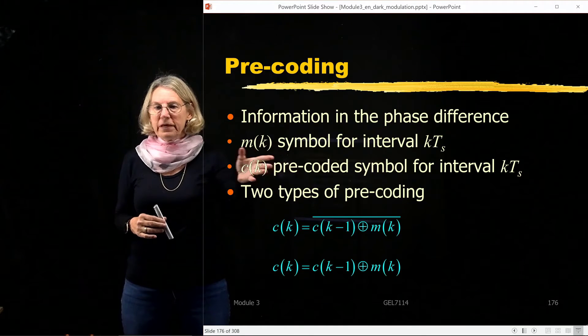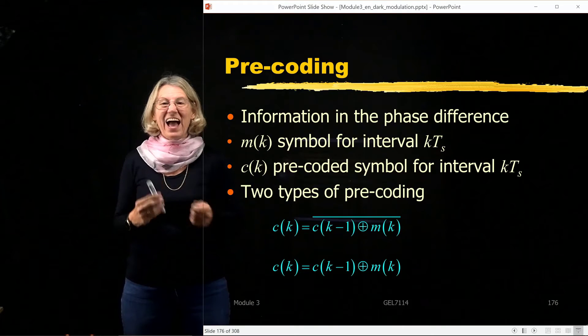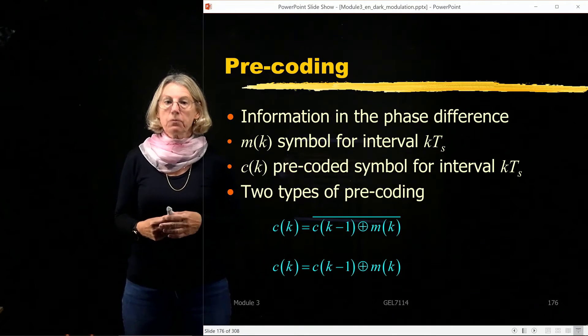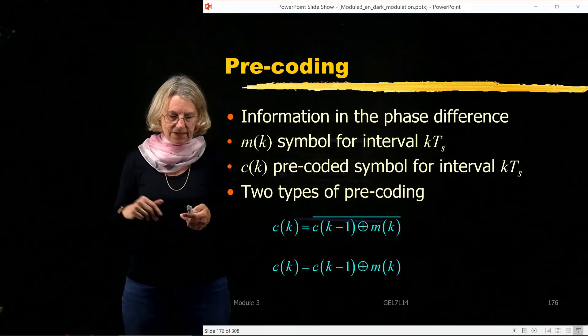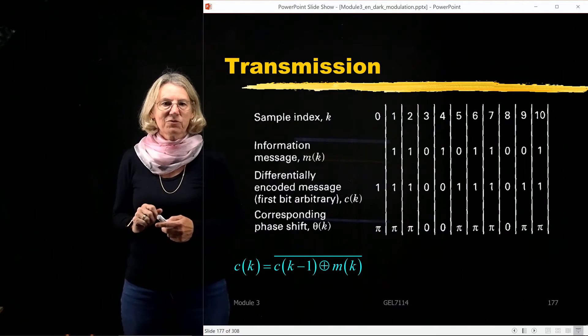So M of k will be the information to be transmitted, and C of k is going to be what I actually transmit